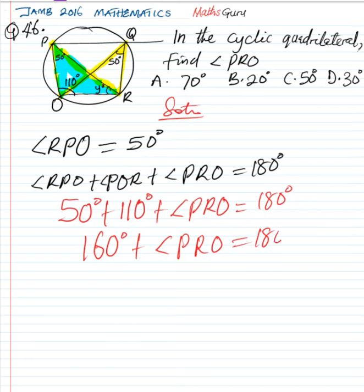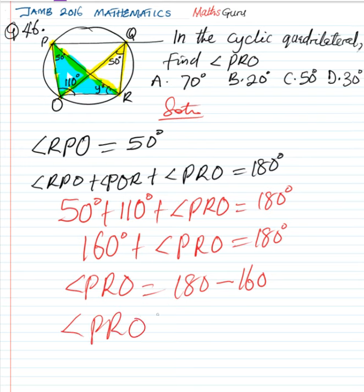50 plus 110 is 160 degrees plus angle PRO equal to 180 degrees. To find angle PRO now, we simply collect the like terms. We have angle PRO to be equal to 180. 160 crossing the equation, sign becomes negative 160. So we have angle PRO to be equal to 180 minus 160, which is simply 20 degrees. Therefore, the correct option is B.